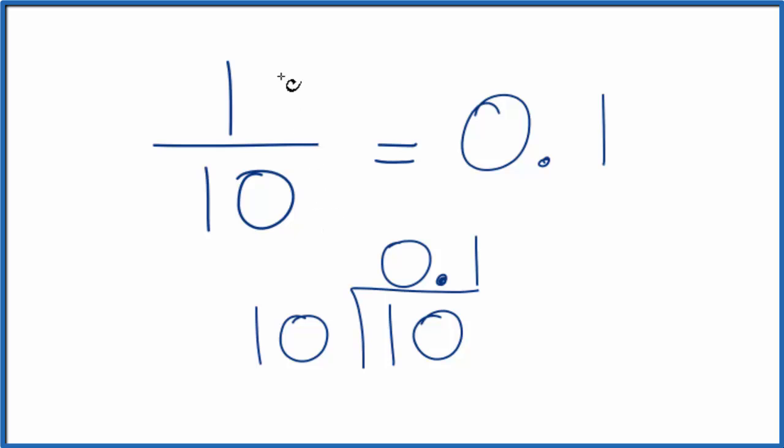So one-tenth, the fraction one-tenth, that's equal to zero point one, just like we found on our calculator. This is Dr. B, converting the fraction one-tenth to decimal form. Thanks for watching.